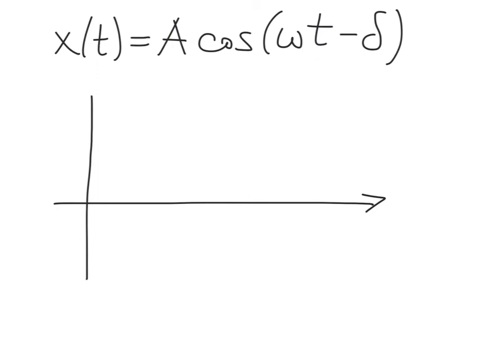Now let's look at another form of the solution for the simple harmonic oscillator: x(t) = A·cos(ωt − δ). This solution is entirely equivalent to the combination of cosine and sine we just developed. To capture the two initial conditions x₀ and v₀, we incorporate the constants of integration as an amplitude A and a phase offset δ. We define the phase angle φ = ωt − δ, which is just the argument of the cosine.